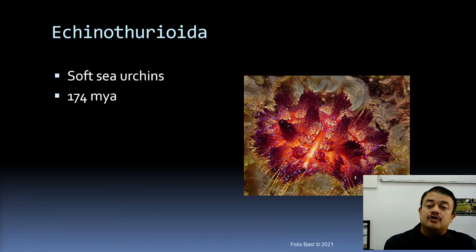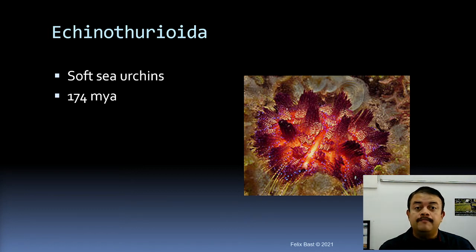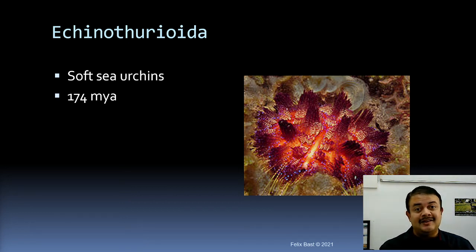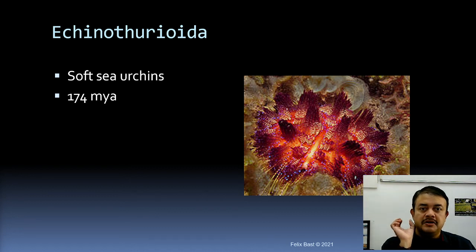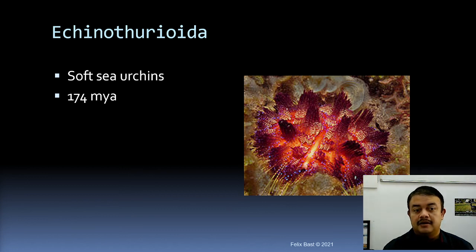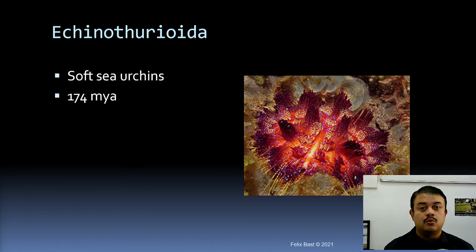Finally, soft sea urchins — family Echinothuriidae — are also living fossils, with their lineage originating 174 million years ago. While most species go extinct within about 10 million years of their origin, these are real exceptions. Originating 174 million years back and still living today — that is why these organisms are called living fossils.